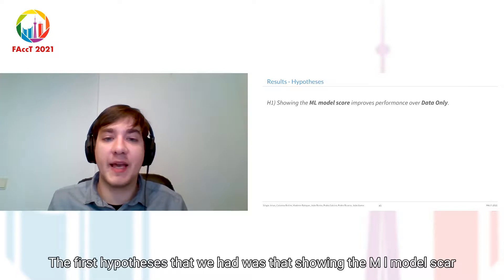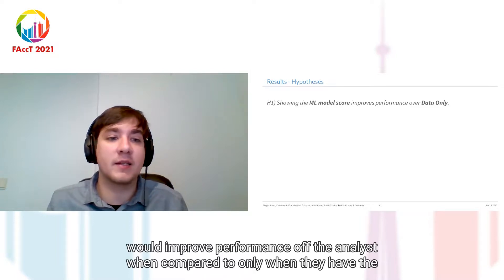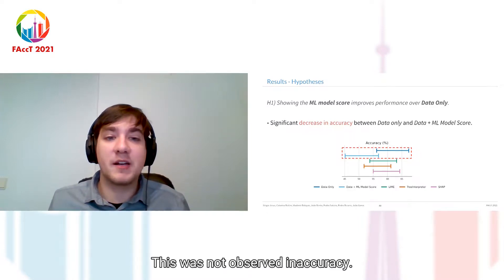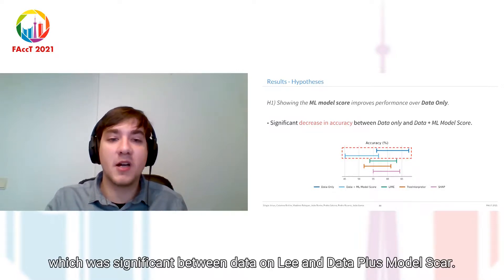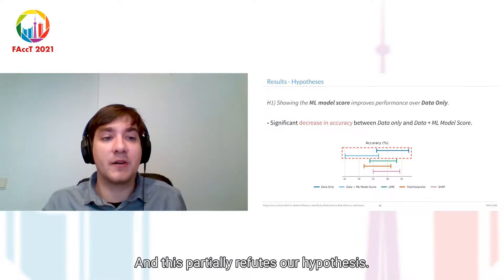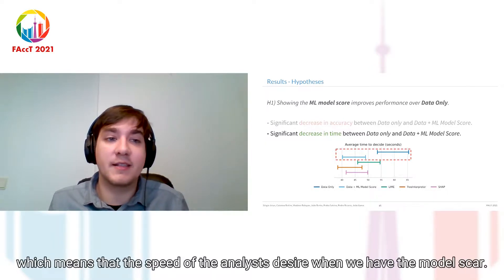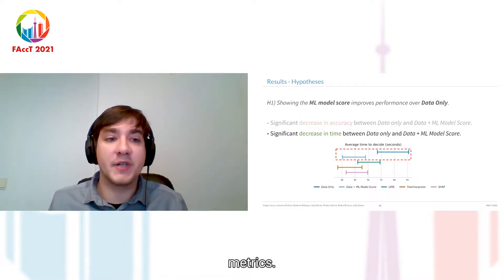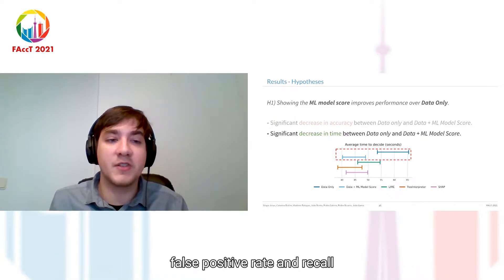The first hypothesis was that showing the ML model score would improve analyst performance compared to data only. This was not observed in accuracy — we actually saw a significant decrease in accuracy between data only and data plus model score, which partially refutes our hypothesis. However, we did see a significant decrease in decision time, meaning analysts were faster when the model score was shown, which partially supports the hypothesis. No other significant changes were detected in false positive rate or recall.